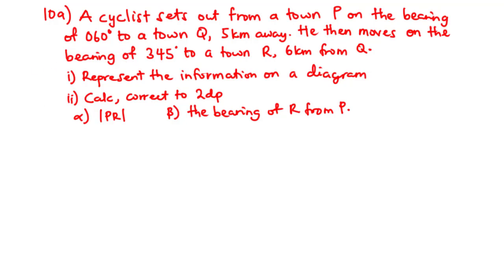A cyclist sets out from a town P on the bearing of 60 degrees to a town Q, 5 kilometers away. He then moves on the bearing of 345 degrees to a town R, 6 kilometers from Q. Part I: represent the information on a diagram. Part II: calculate, correct to two decimal places, alpha - the distance PR, and beta - the bearing of R from P.